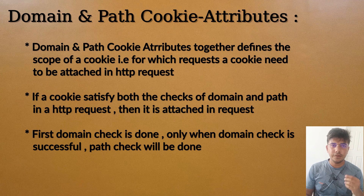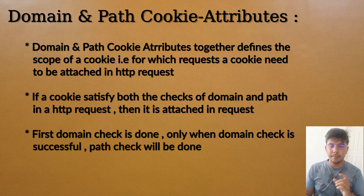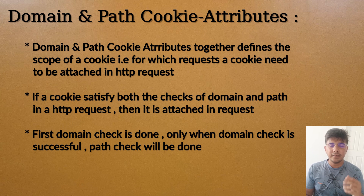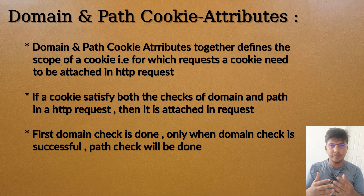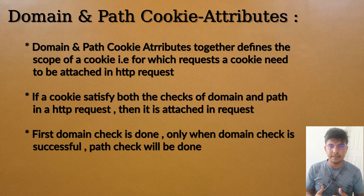In this video we will be discussing the two cookie attributes: domain and path. These domain and path together define the scope of a cookie. For instance, how does a browser know for which request which cookies need to be attached?